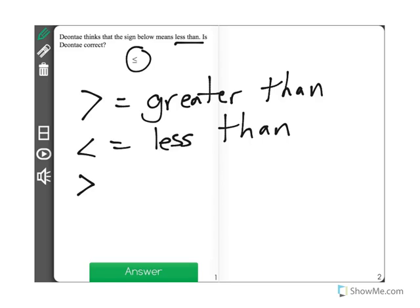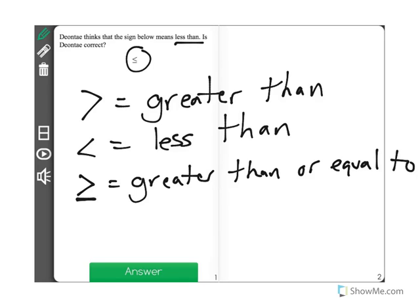When we have a greater than sign with a line underneath, it means greater than or equal to. So it includes the number that you are posting the inequality about.